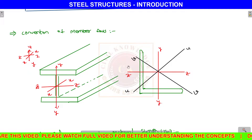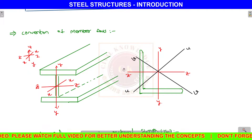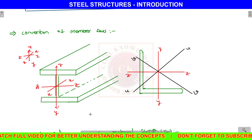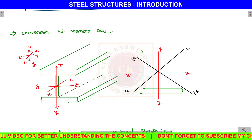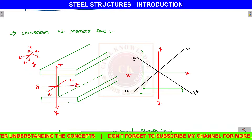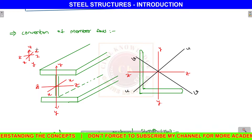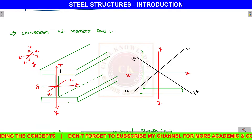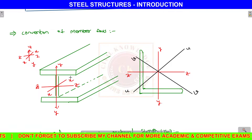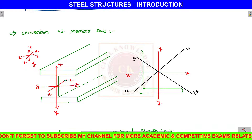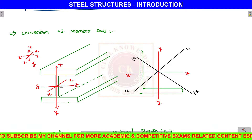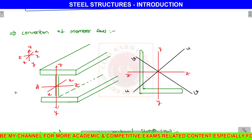In general, there are different sections of steel members: I-section, L-section, and unequal section. If there is a major axis or a minor axis — suppose there is a Z axis, perpendicular Y axis, and along the member X axis — the major or minor axis is determined based on moment of inertia.